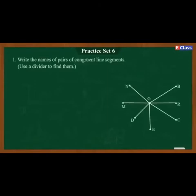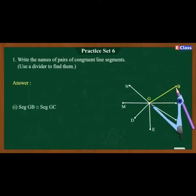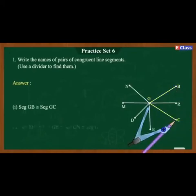Let's begin with Practice Set 6, Question 1: Write the names of pairs of congruent line segments. Use a divider to find them. Let's see the answers. Segment GB is congruent to segment GC — the measures are the same.